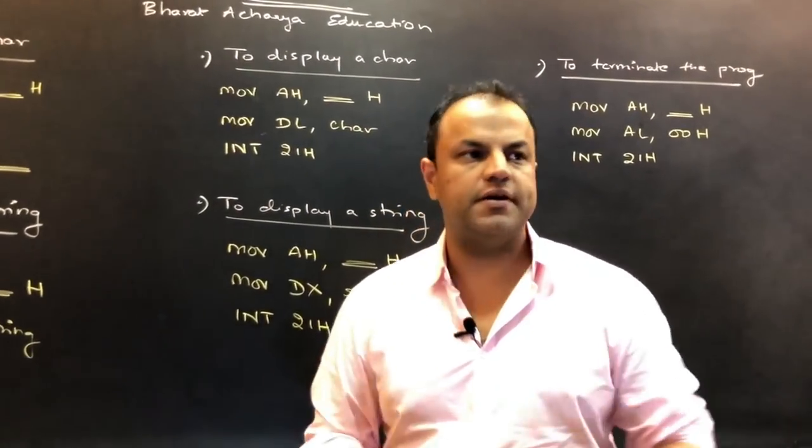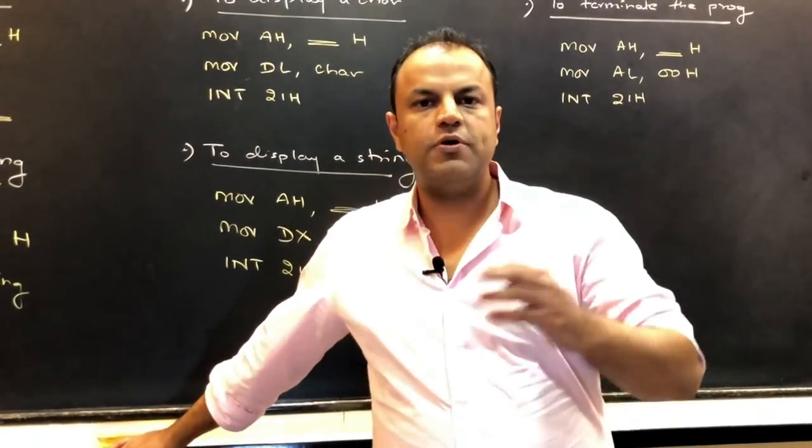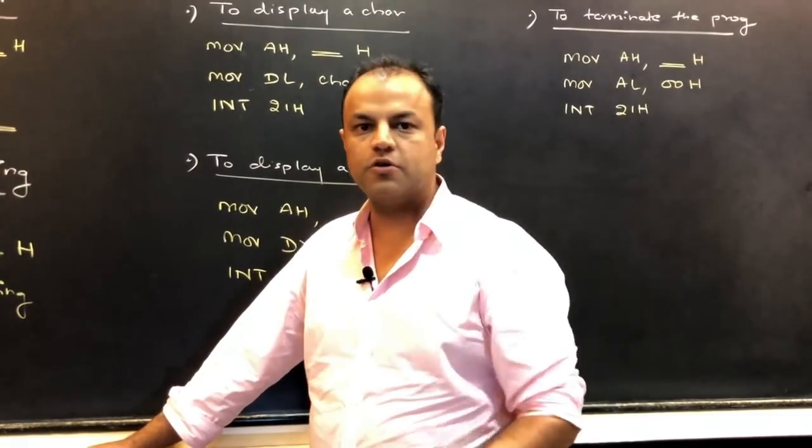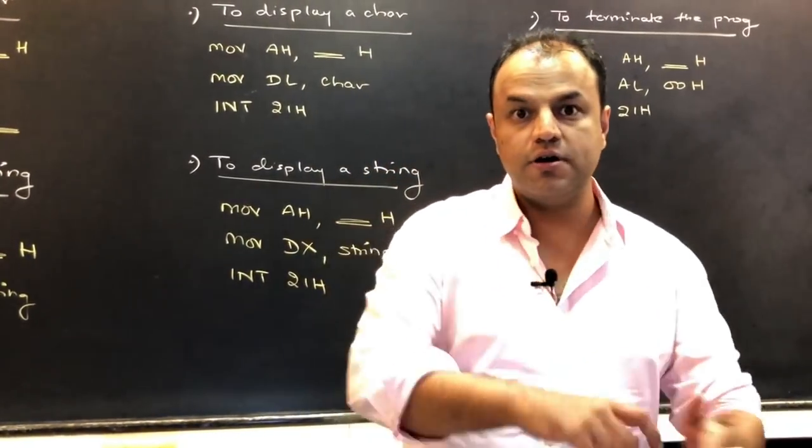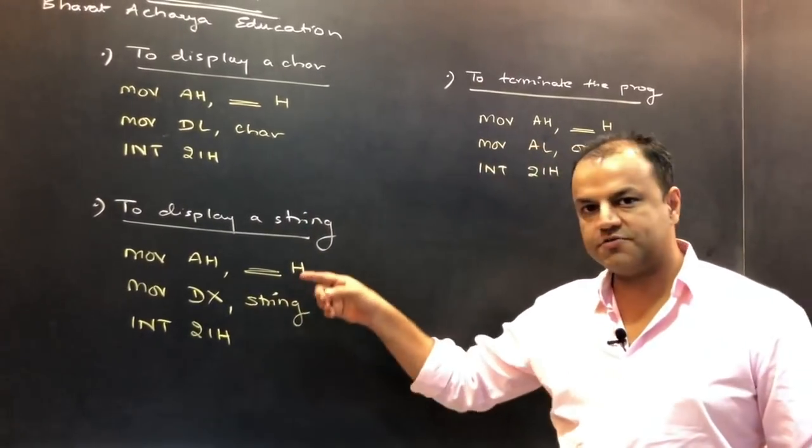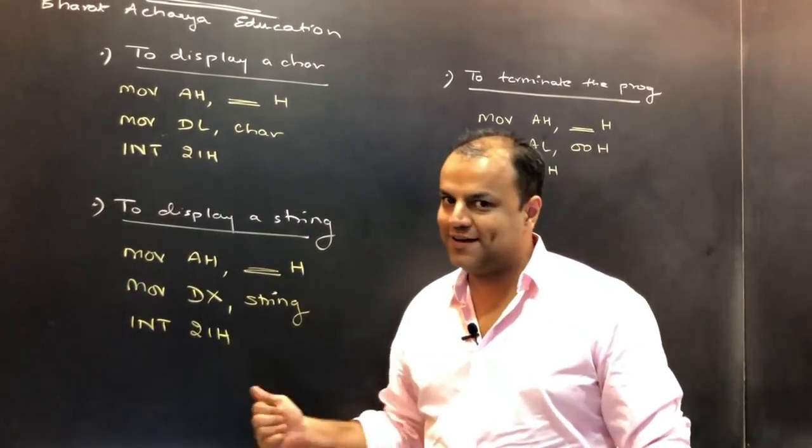Suppose you want to display a string. The question is, write a program to invert a string or arrange a string in ascending order or something of that sort. So, they'll give you a random order string. You arrange it in ascending order. Now, you want to display the whole string. To display a single character or to display a string, both cases, again, you use INT-21.